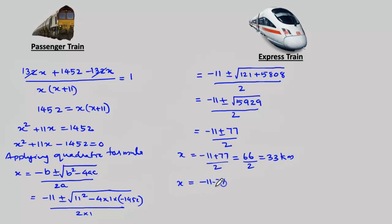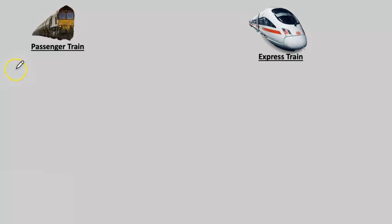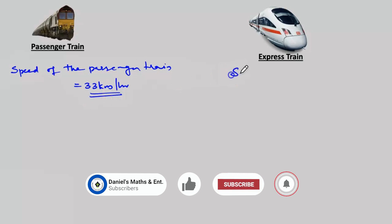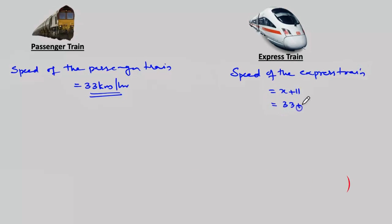The square root of 5929 is 77. So x equals minus 11 plus or minus 77, divided by 2, giving two values: x equals minus 11 plus 77 by 2, and x equals minus 11 minus 77 by 2. This gives x equals 33 and x equals minus 44. Since speed must be positive, the speed of the passenger train is 33 kilometers per hour, and the speed of the express train is 33 plus 11 equals 44 kilometers per hour.